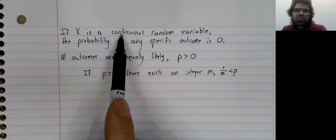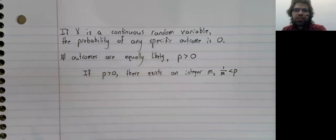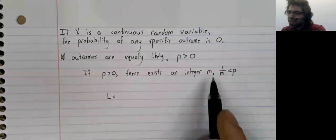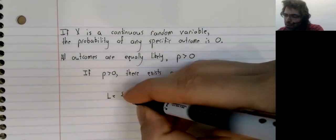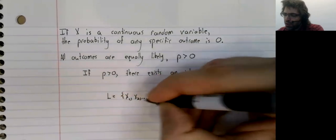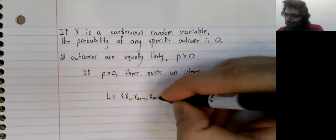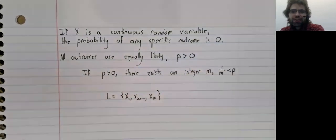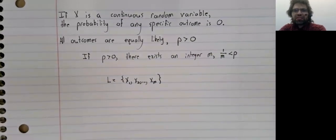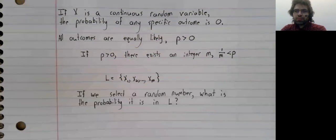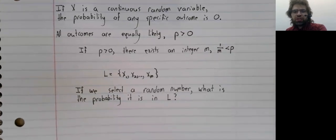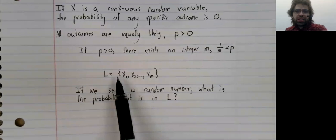Now, if x is continuous, there are an infinite number of outcomes. Select m of them: x sub one, x sub two, up to x sub m. And ask the following question: if we select a random number, what's the probability that it is in this set?